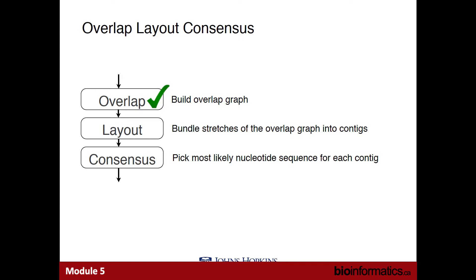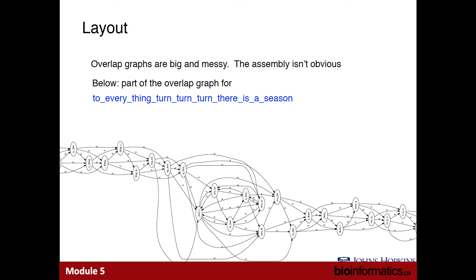The assembler then computes a layout, bundling stretches of the overlap graph together into contigs. It's easier to understand genome assembly if we move away from ACGT for a moment and use a fragment from a song: 'To everything, turn, turn, turn, there's a season.' The word 'turn' here stands in for a genomic repeat — it's present in multiple copies — and allows us to visualize what happens to an overlap graph when there are repeats. Here's the overlap graph constructed using seven-character fragments overlapping by three characters. It's quite complicated and just looking at it, it's not apparent what the original song fragment is.